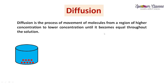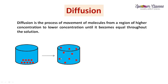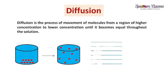Gradient means difference in concentration. Until it becomes equal throughout the solution. I'll show you with a picture — these are the KMnO4 molecules and this is the water molecules. Throughout this solution we end up having equal concentration of the solute particles.